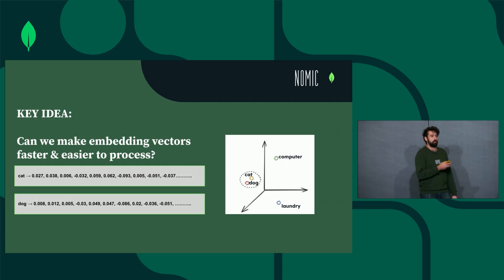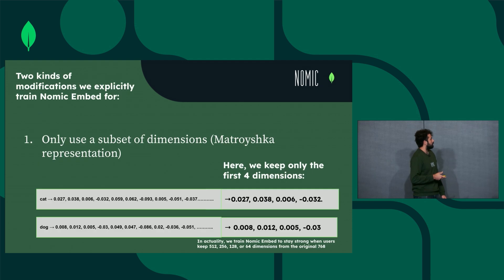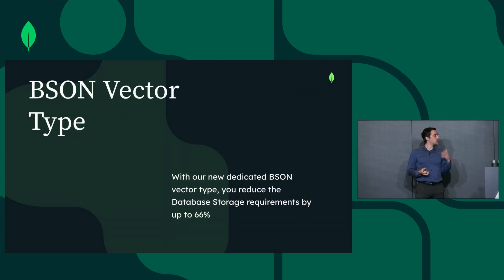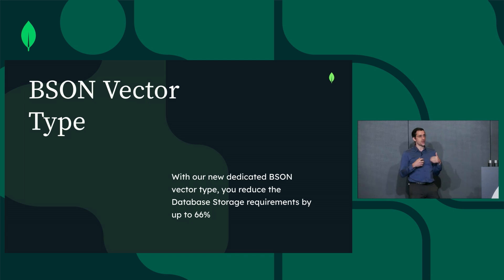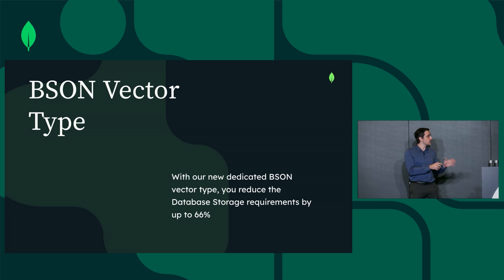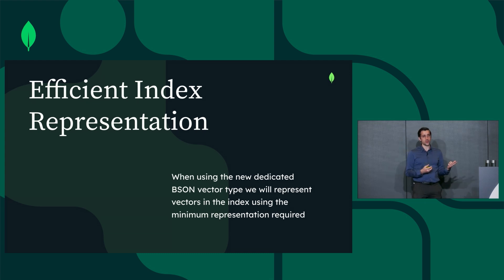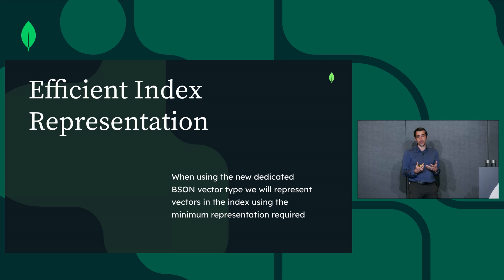What we want to do is make these embedding vectors still group similar data together, but using less memory and less time. What we've done is added a new type to BSON via our bin data type — now subtype 8 — that allows you to represent vectors very efficiently inside of the database. We've been talking a lot about reducing cost on memory, which we are, but this is also reducing cost on storage. The other thing we're doing is the efficient index representation — ensuring that when you use this reduced type inside of the database, we use a reduced representation inside of the index. That's how we are able to take up so much less RAM when it comes to loading the index, giving us the minimum representation inside of the index.